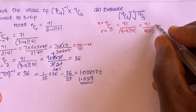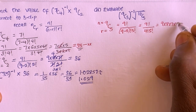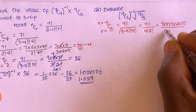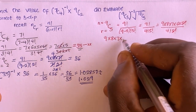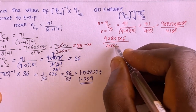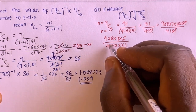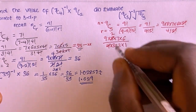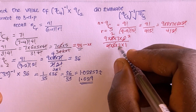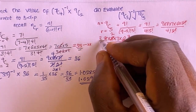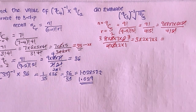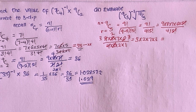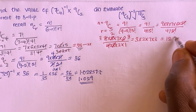Expanding: 9 multiplied by 8 multiplied by 7 multiplied by 6 multiplied by 5 factorial, divided by 4 factorial times 5 factorial. The 5 factorials cancel, leaving 9 times 8 times 7 times 6, divided by 4 times 3 times 2 times 1. Simplifying: 2 goes into 6 three times, 3 goes into 9 three times, 4 goes into 8 twice. This gives 3 multiplied by 2 multiplied by 7 multiplied by 3, which equals 6 times 7 times 3 equals 42 times 3 equals 126. So 9 combination 5 equals 126.